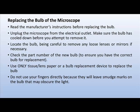Replacing the bulb of the microscope: the microscope requires a source of light. In the brightfield microscope, the bulb is the source of light. This bulb is made of glass and is very delicate. After the completion of the bulb's lifespan due to overuse, the bulb will fuse and must be replaced. Read the manufacturer's instructions carefully before replacing the bulb. First, unplug the microscope from the electrical outlet. Allow the bulb to cool down before you attempt to remove it.